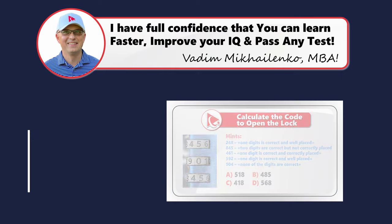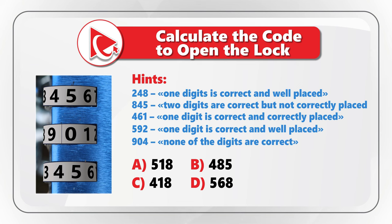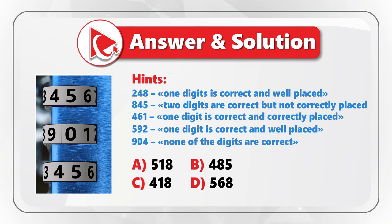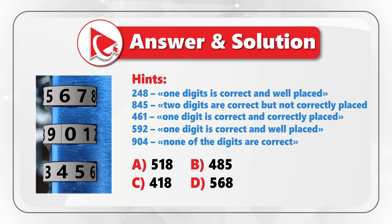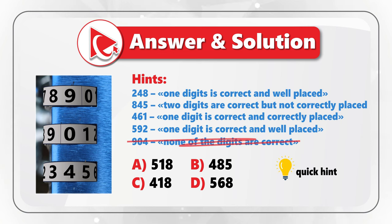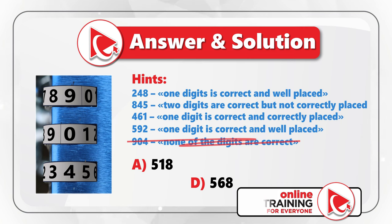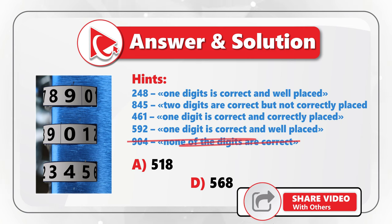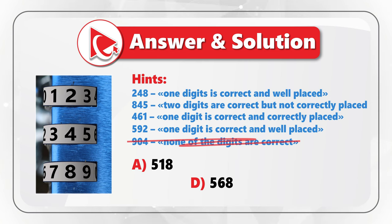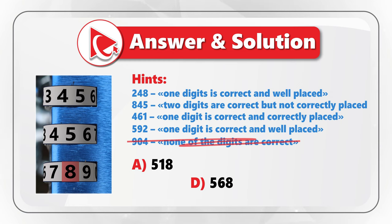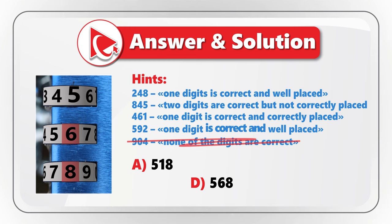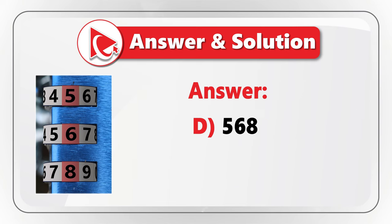You solve this problem through elimination. Starting with hint 5: since in combination 904 none of the digits are correct, we can eliminate choices B and C, because both contain digit 4. From the remaining hints: in hint 1 (digits 2, 4, 8), only digit 8 is correctly placed. In hint 2, digits 8 and 5 are correct but not correctly placed. In hint 3, digit 6 is correct and correctly placed. In hint 4, digit 5 is correct and well placed. Based on this, the correct answer is Choice D — 5, 6, 8.